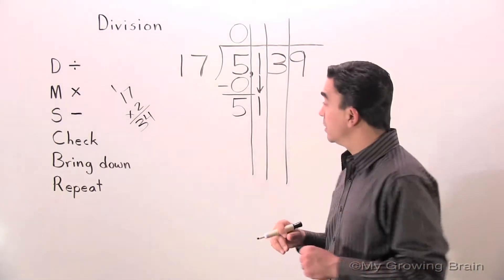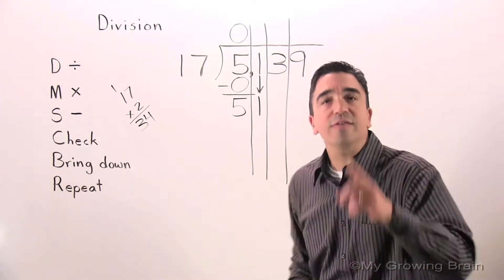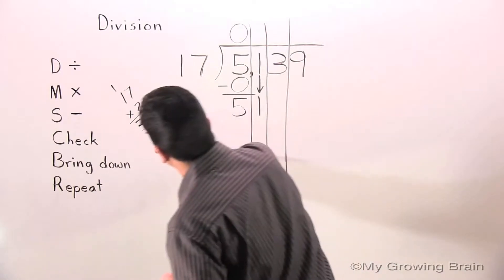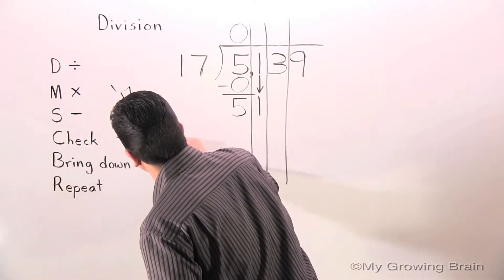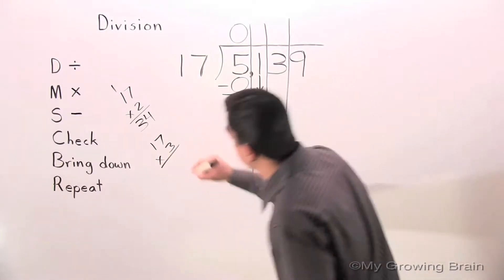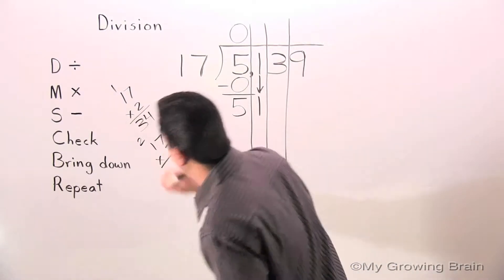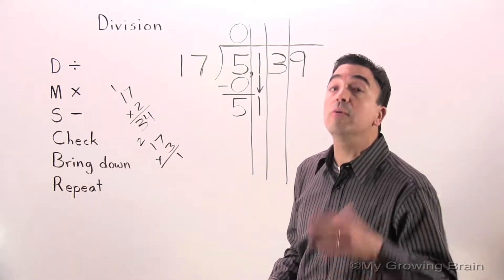That's closer to 51. But I want to see if we can go further. Let's try 17 times 3. 3 times 7, 21. Regroup the 2. 3 times 1 is 3 plus 2, 5.